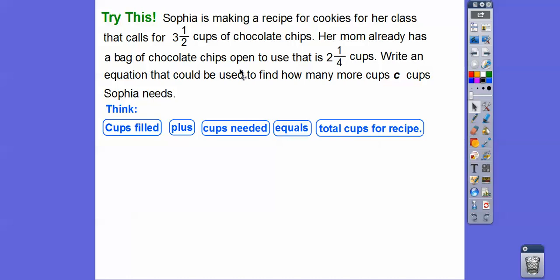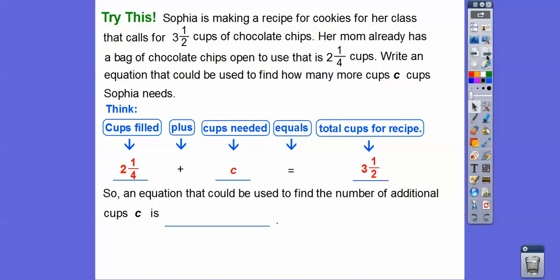And her total cups is going to be that whole 3½ cups of chocolate chips. So the cups filled is that 2¼ right there, because her mom already has that much, plus the cups needed, how many more cups do we need? We're going to call it C right there. Equals, put the equal sign there. The total cups for the recipe is that 3½ right there. So there's our equation. An equation that could be used to find the total number of additional cups C is going to be 2¼ plus C equals 3½ right there. Easy, huh?